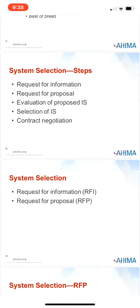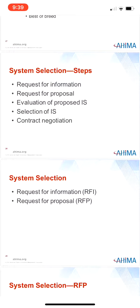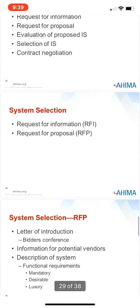The request for information, or RFI, is a formal document requesting information on an information system. The RFI asks the vendor for basic information about the product and how it would meet the requirements outlined in the RFI. The RFI can be used to select minor information systems, or the information gathered can be used to determine who will receive the more rigorous request for proposal, or RFP — the type of business correspondence asking for very specific product and contract information sent to a narrow list of pre-selected vendors.